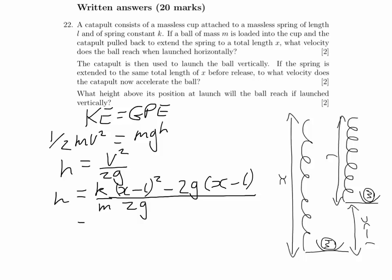We can simplify by cancelling the 2g in the second term with the 2g in the denominator, giving the final answer: h = k(x − L)² / (2mg) − (x − L).